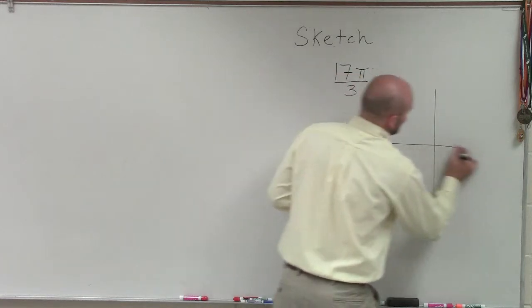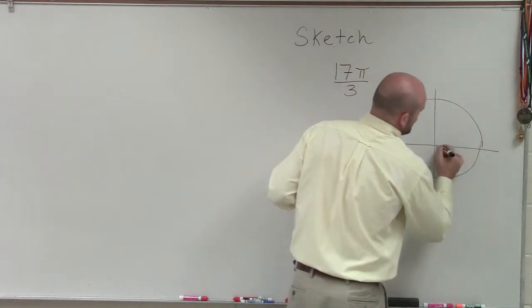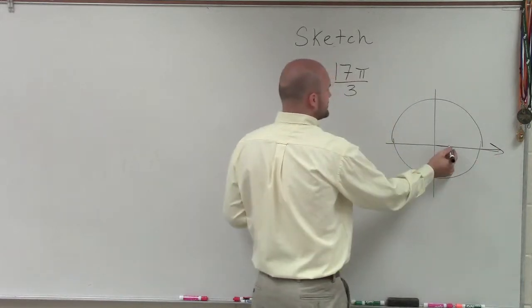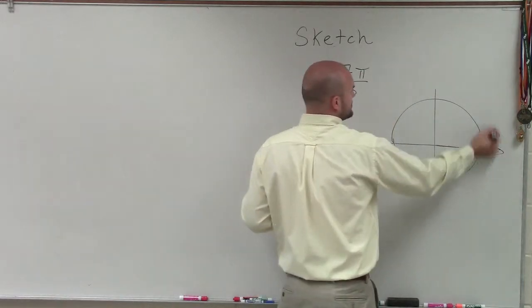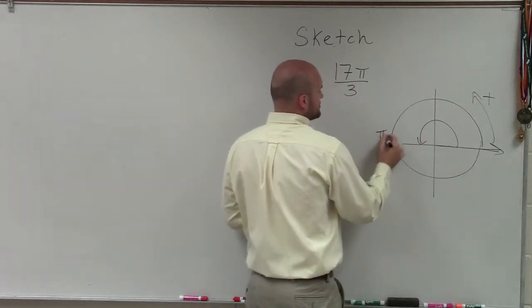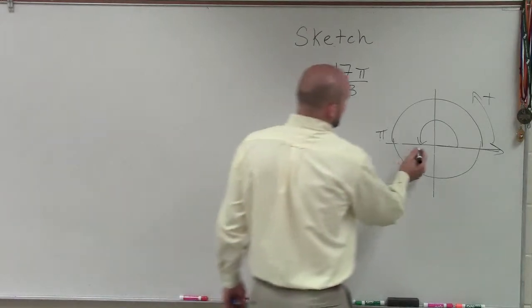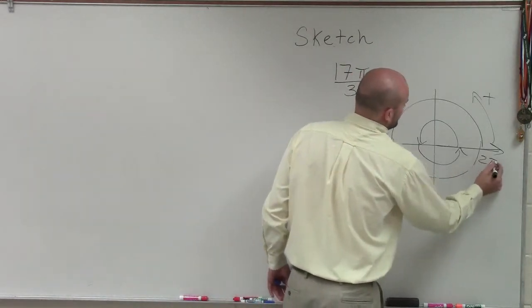So to sketch this graph, what we're going to do is we need to remember here, we're always going to start at our initial side. And if we rotate a ray, remember this is in the positive direction, so we're going to go counterclockwise. If we rotate a ray halfway around a circle, that's going to be pi. But what I like to do, well actually, that's going to be pi, and then all the way around would be 2 pi.